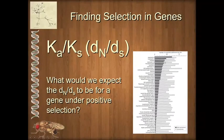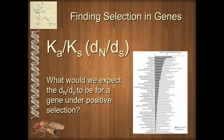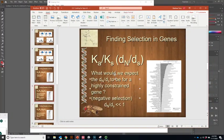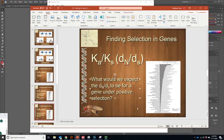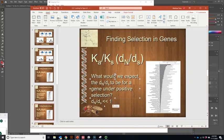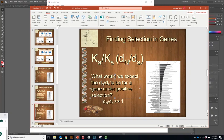Under positive selection, we don't see examples in this particular diagram, but this would imply that the non-synonymous mutations are higher than the synonymous mutations. Positive selection means the gene is probably important in one or more lineages, and in those lineages it has evolved and mutated — those mutations have been kept — and it's taken on a brand new function. When we see strong positive selection, that number would be significantly greater than one.